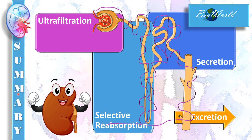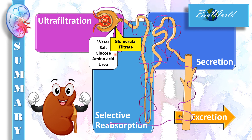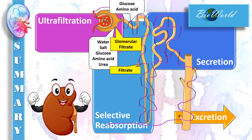Let's summarize the process of urine formation. The first step is ultrafiltration that occurs at the glomerulus and Bowman's capsule. Ultrafiltration produces a glomerular filtrate that contains useful substances such as water, salt, glucose, and amino acids, as well as waste substances such as urea. The glomerular filtrate then flows into the proximal convoluted tubule where selective reabsorption occurs. At the proximal convoluted tubule, 100% of glucose and 100% of amino acids are reabsorbed into the peritubular capillaries. So the fluid that flows out of the proximal convoluted tubule — the filtrate — will contain water, salt, and urea.